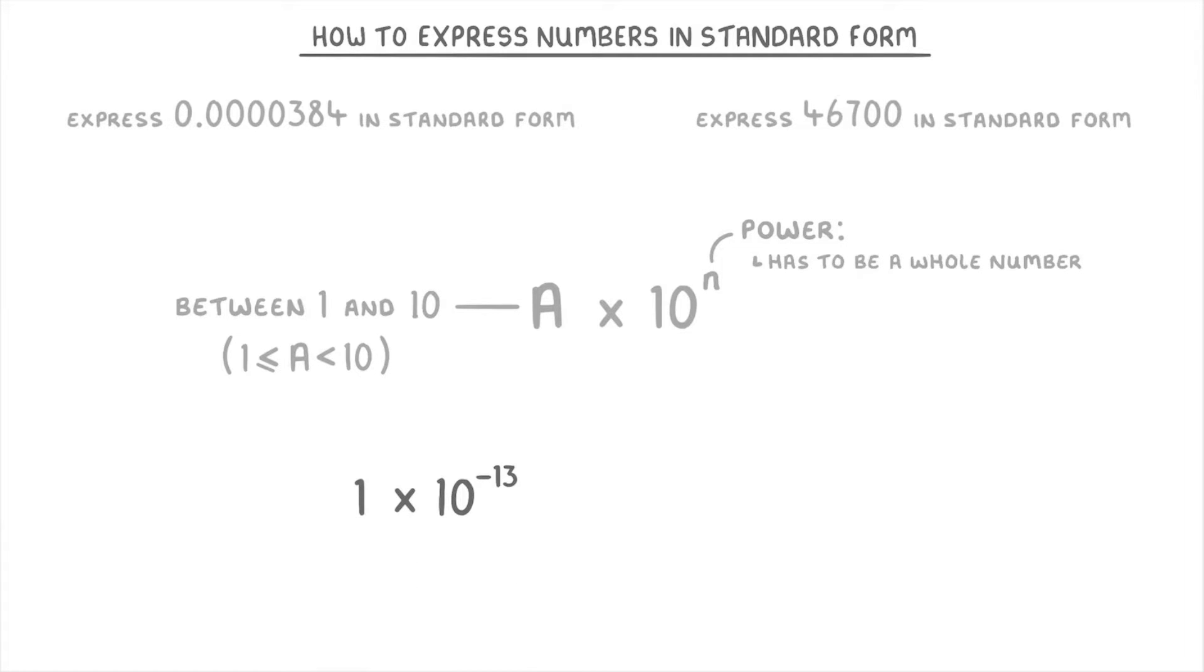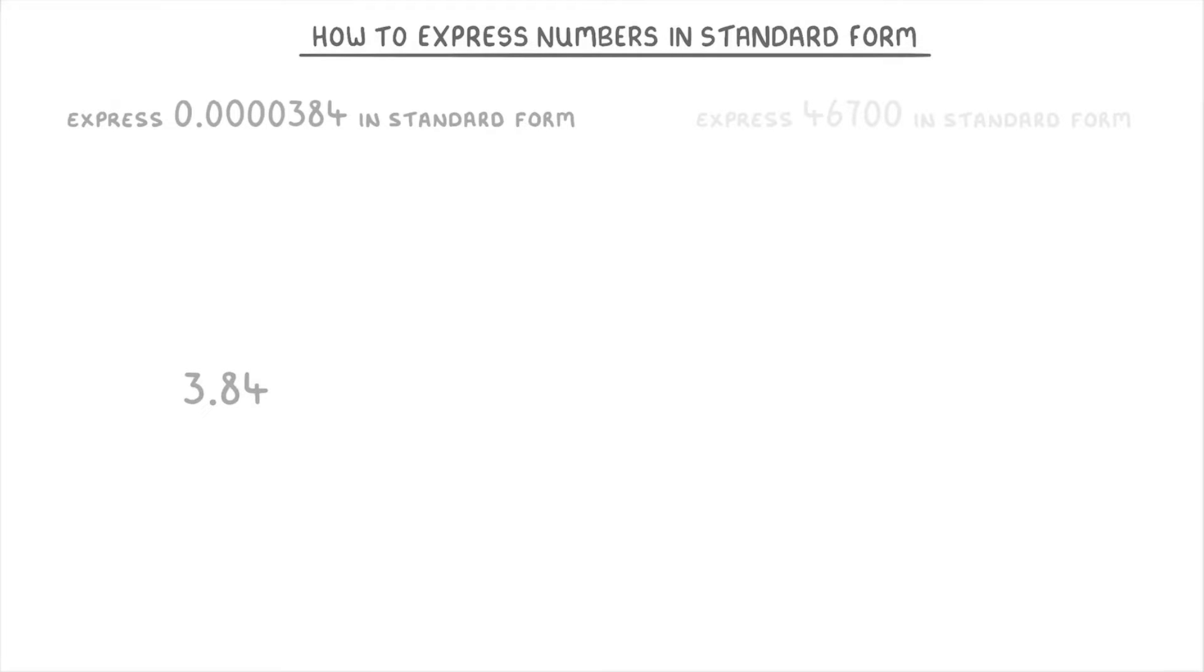Things like 1 times 10 to the power of negative 13 or 4.5 times 10 to the power of 4. In this first example, we need to express 0.0000384 in standard form. Looking at this number, we know that we want to end up with 3.84 times 10 to the power of something.